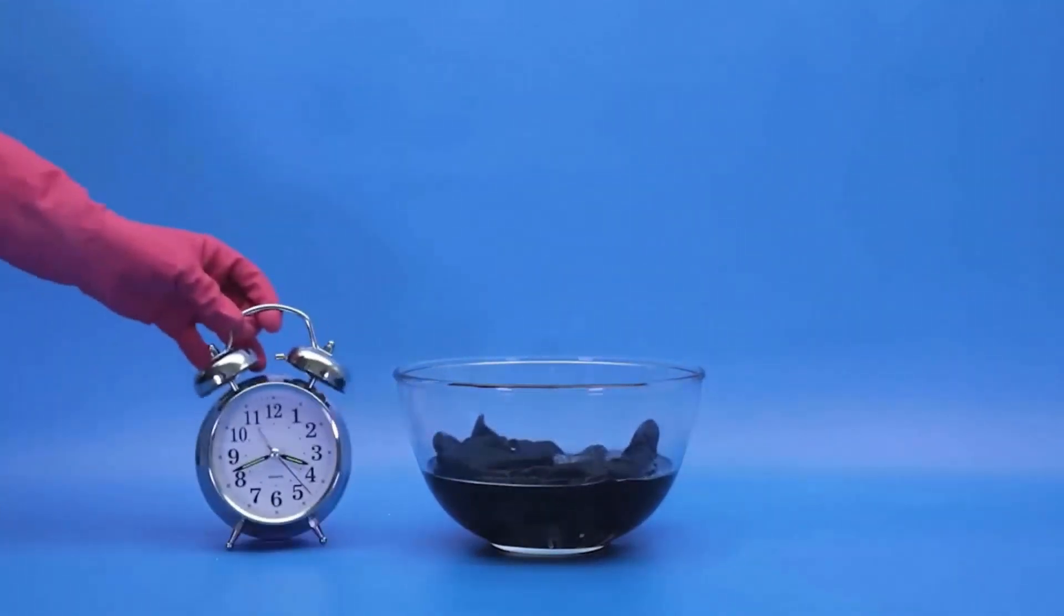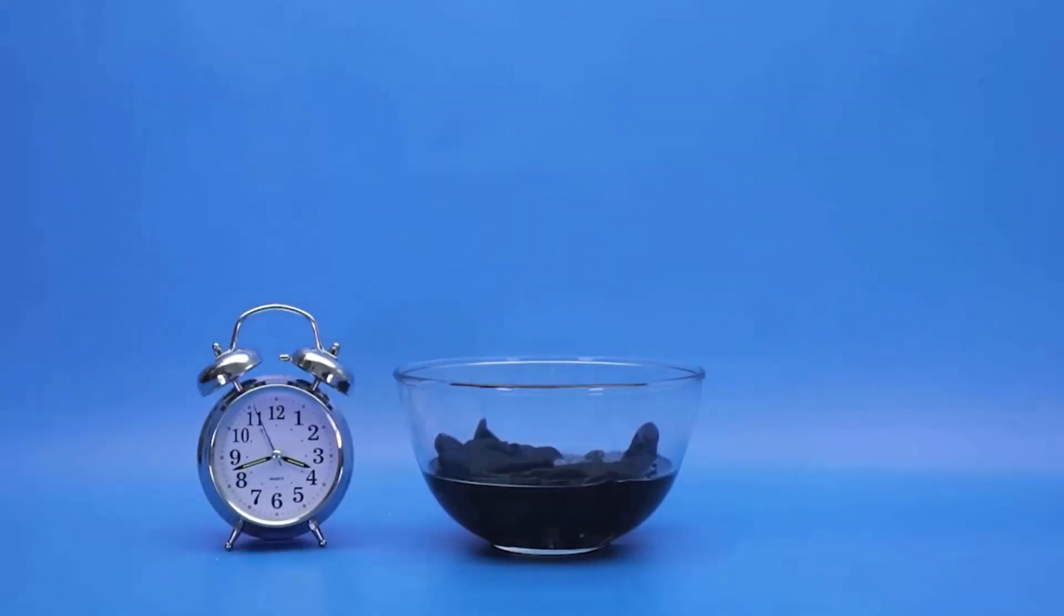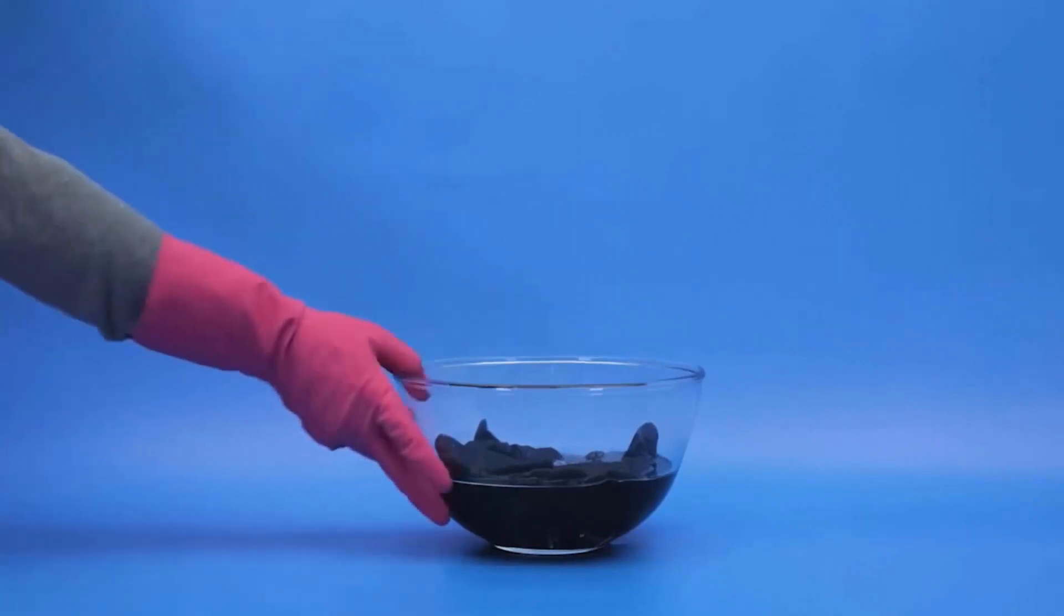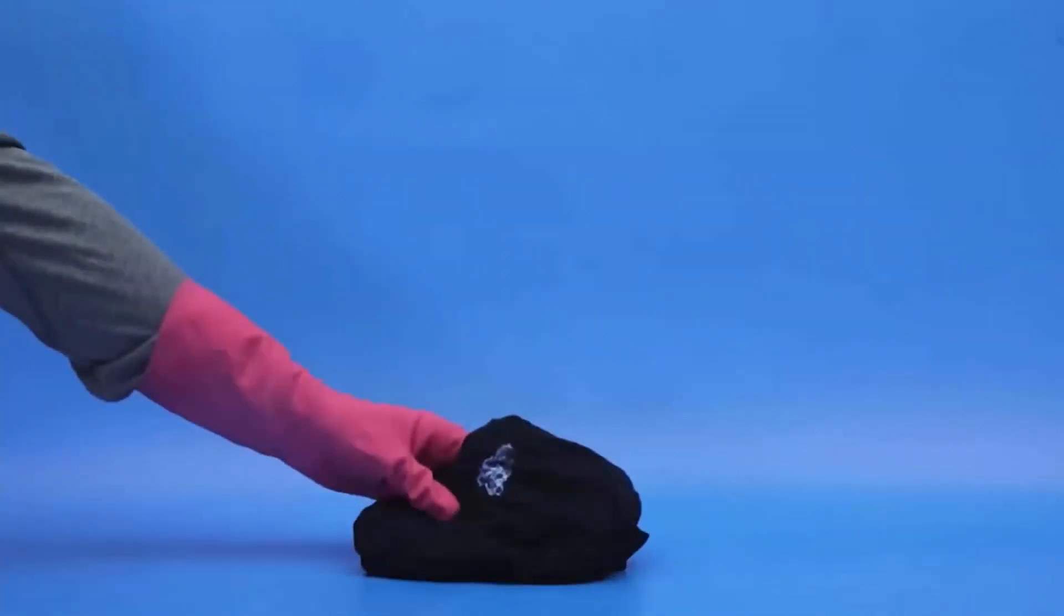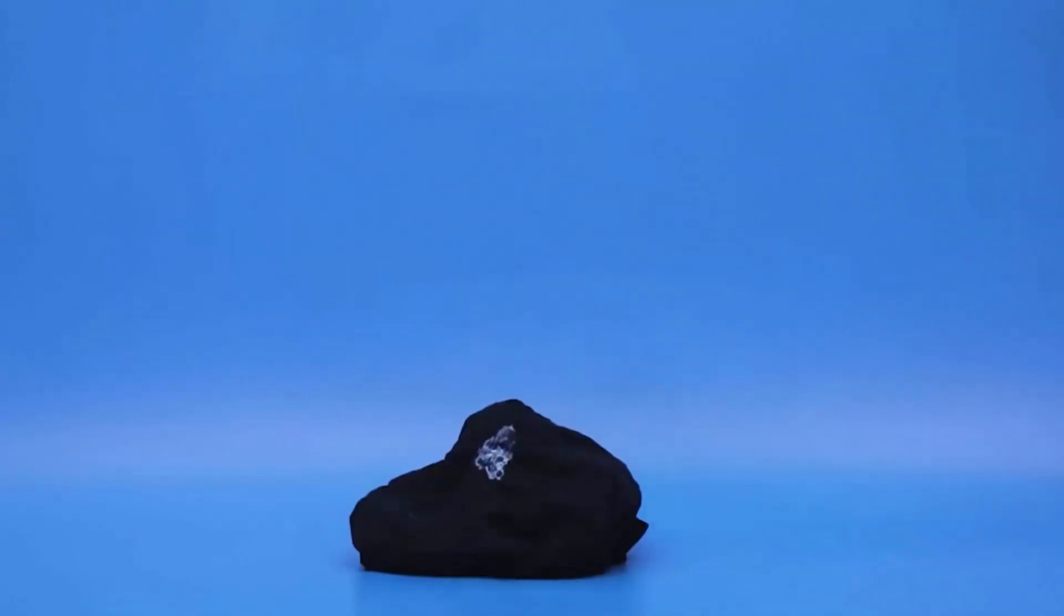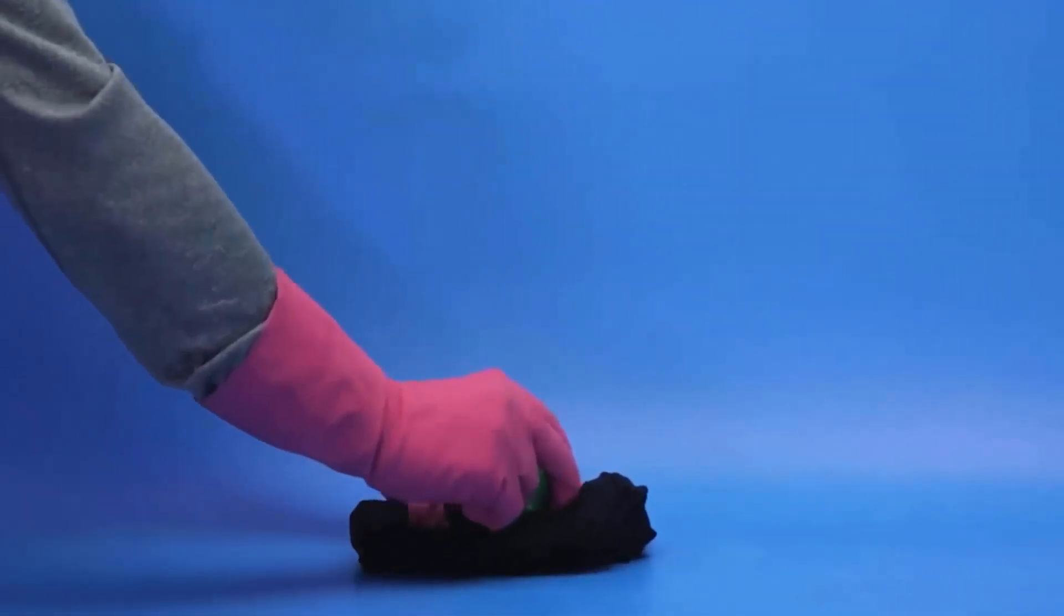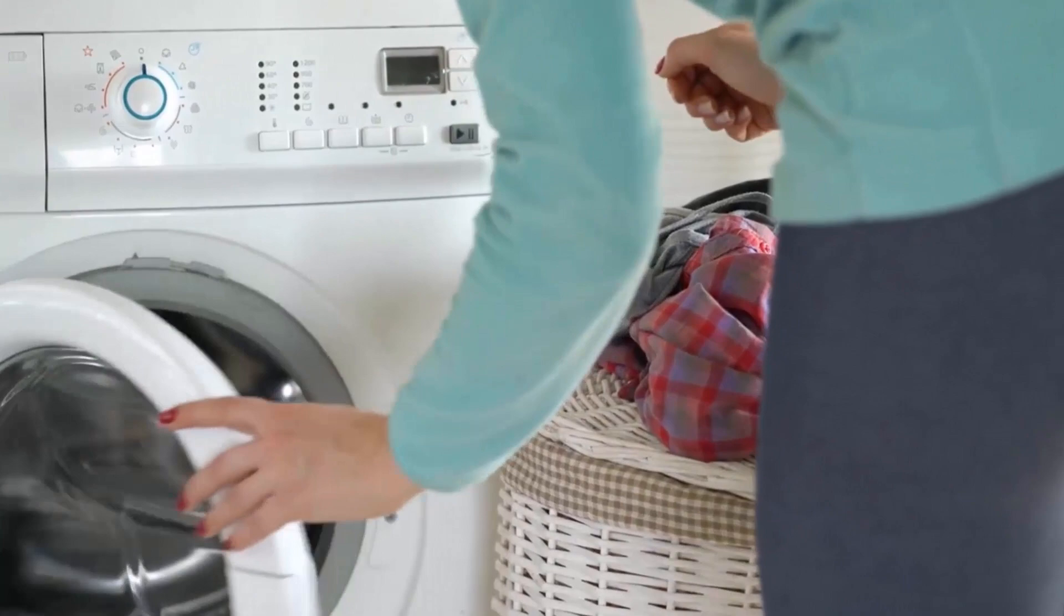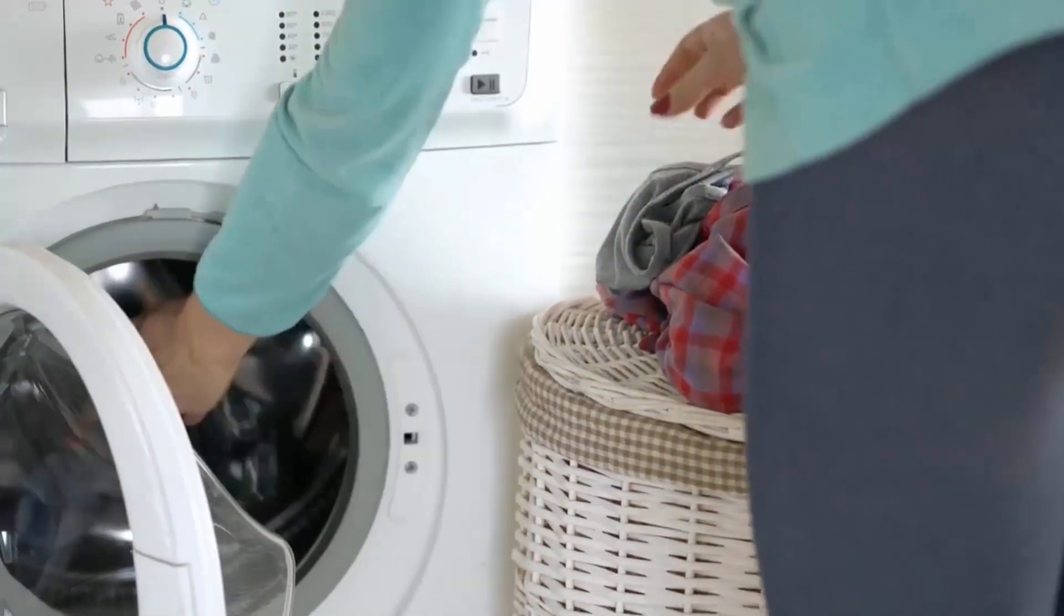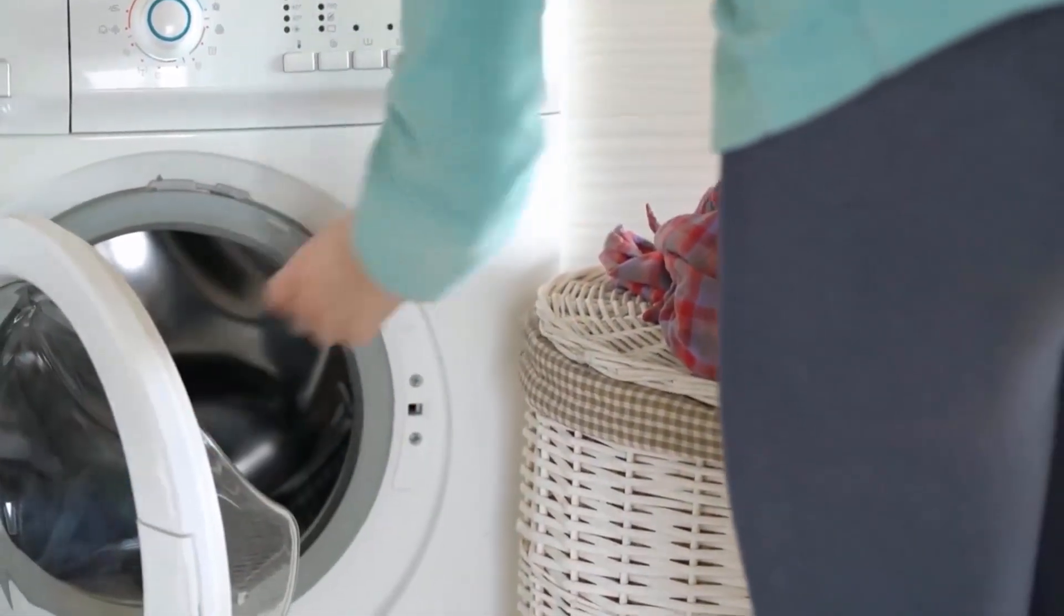Let it soak overnight to help soften the glue. Then remove the cloth from cold water and immediately apply liquid laundry detergent on the cloth and gently rub the stain. Put it in a rinse cycle with warm water setting and you will get stain-free cloth.